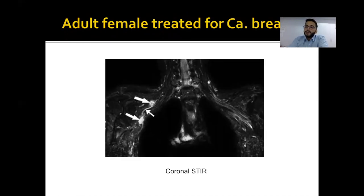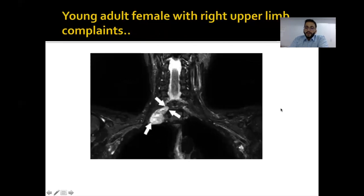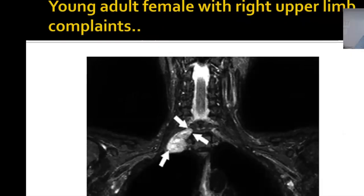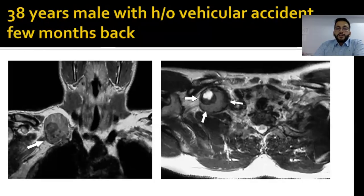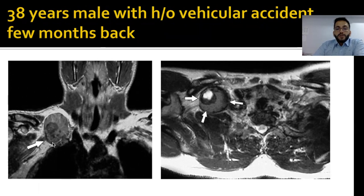Another patient — an adult female being treated for carcinoma breast — showed nodular lesions along the brachial plexus, classical of metastases involving the brachial plexus. Another young adult female with right upper limb symptoms had a characteristic dumbbell-shaped lesion coming out from the neural foramen with well-defined margins, most likely a nerve sheath tumor involving the brachial plexus. A 38-year-old male who had a vehicle accident a few months back now presents with right brachial plexopathy. Imaging shows a well-defined lesion with two signal intensities, representing a subclavian artery pseudoaneurysm causing right-sided brachial plexopathy.